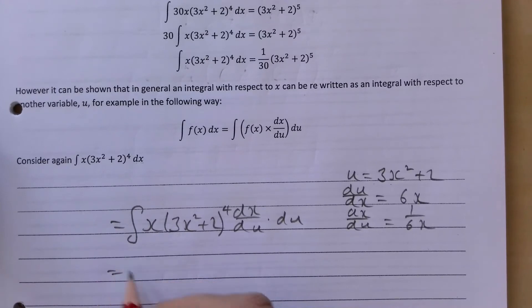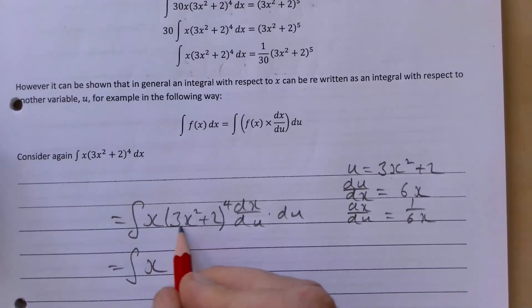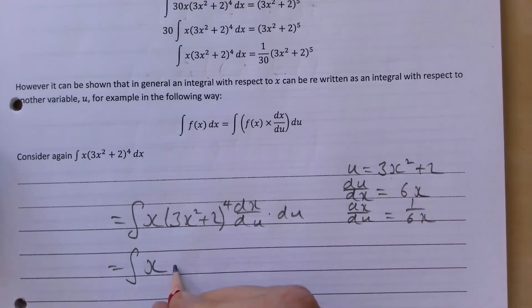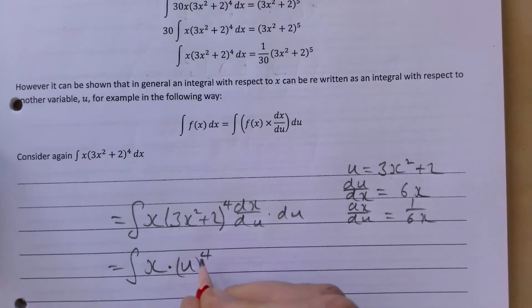And the next line then we're going to have x. 3x² + 2 is what we let u equal to, so we're going to let that equal u, multiplied by u to the power of 4.